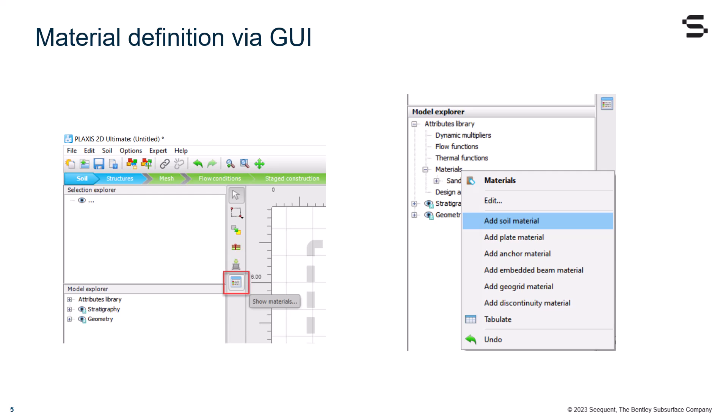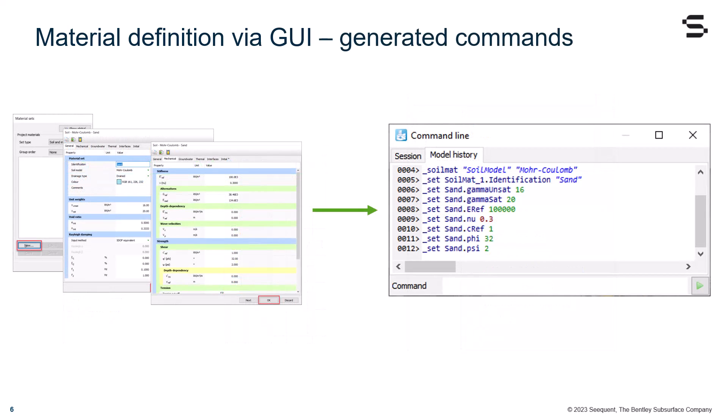Using the GUI, you can either click on the icon at the side toolbar, or use the right button mouse on the Model Explorer group materials, as shown in this slide. Following this workflow, you will soon see updates on the command line, and the final set of commands will look like this.